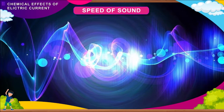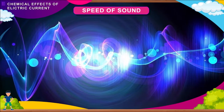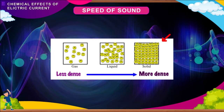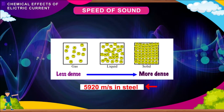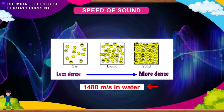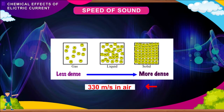The speed of sound changes with the change in medium. Speed also depends on the density and temperature of the medium. At higher temperature, the speed of sound is higher, while at lower temperature the speed decreases. The higher the density of the medium, the faster will be the speed of sound. The speed of sound is maximum in solids — 5,920 meters per second in steel — lesser in liquids at 1,480 meters per second in water, and minimum in gases at 330 meters per second in air.